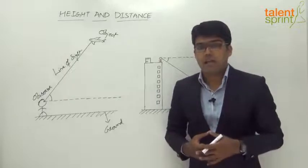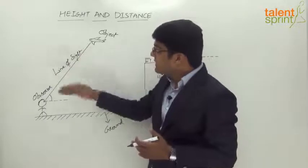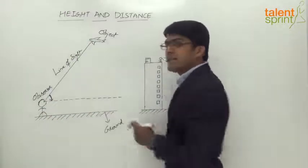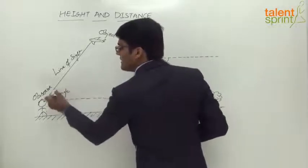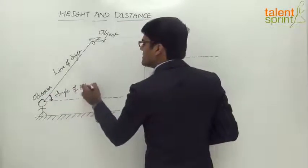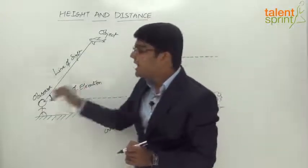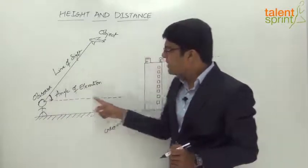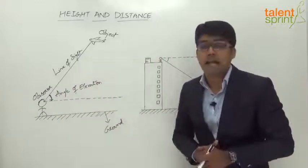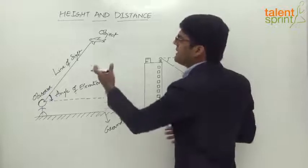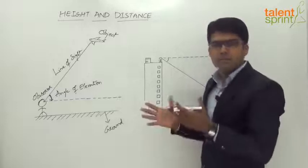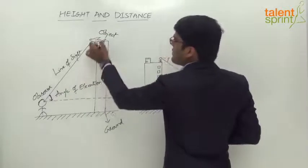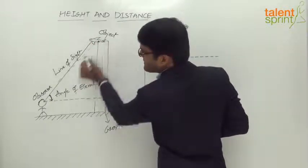The angle of elevation is the angle made by the line of sight with the horizontal. This line of sight makes some angle with the horizontal, and that angle is known as the angle of elevation. Basically, the object is at an elevated position compared to the eye of the observer, so we get an angle of elevation. It is always measured with respect to the horizontal — the angle between the line of sight and the horizontal is what is known as the angle of elevation.